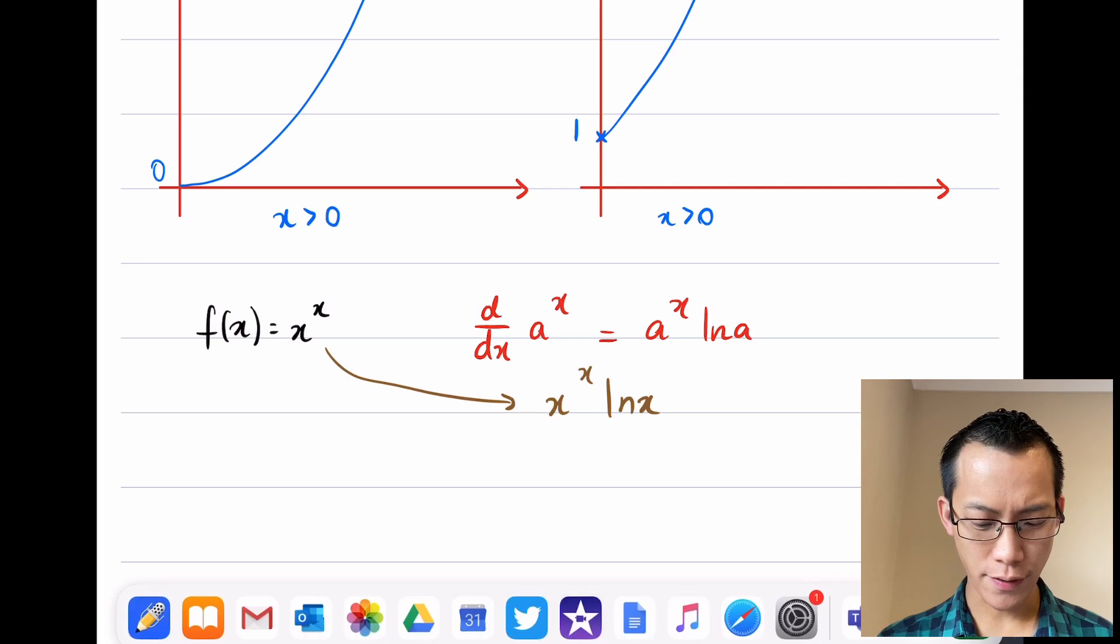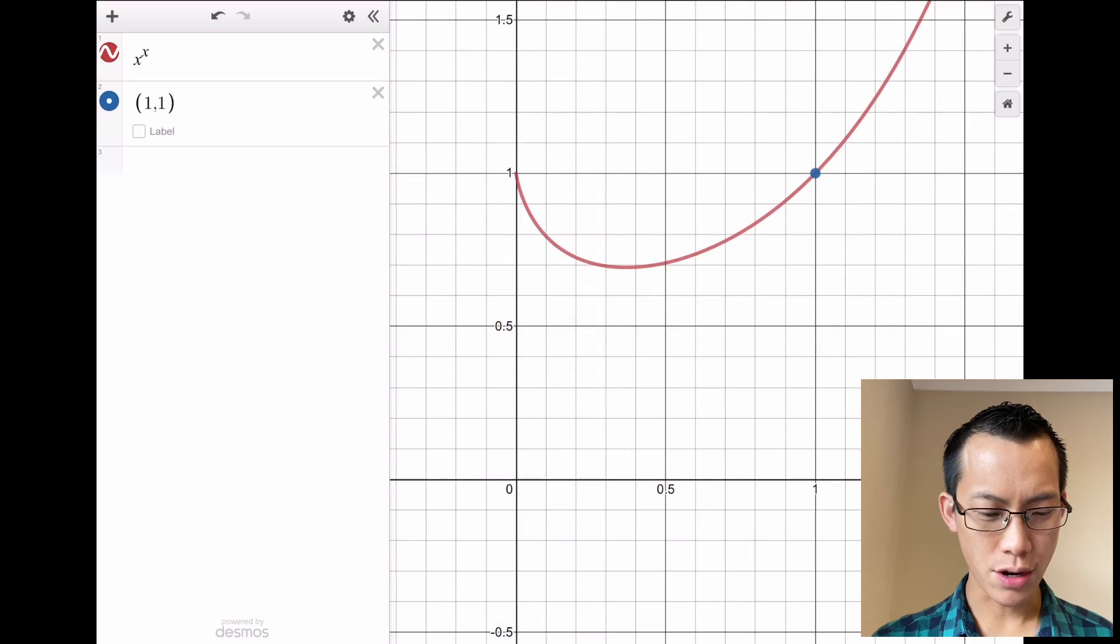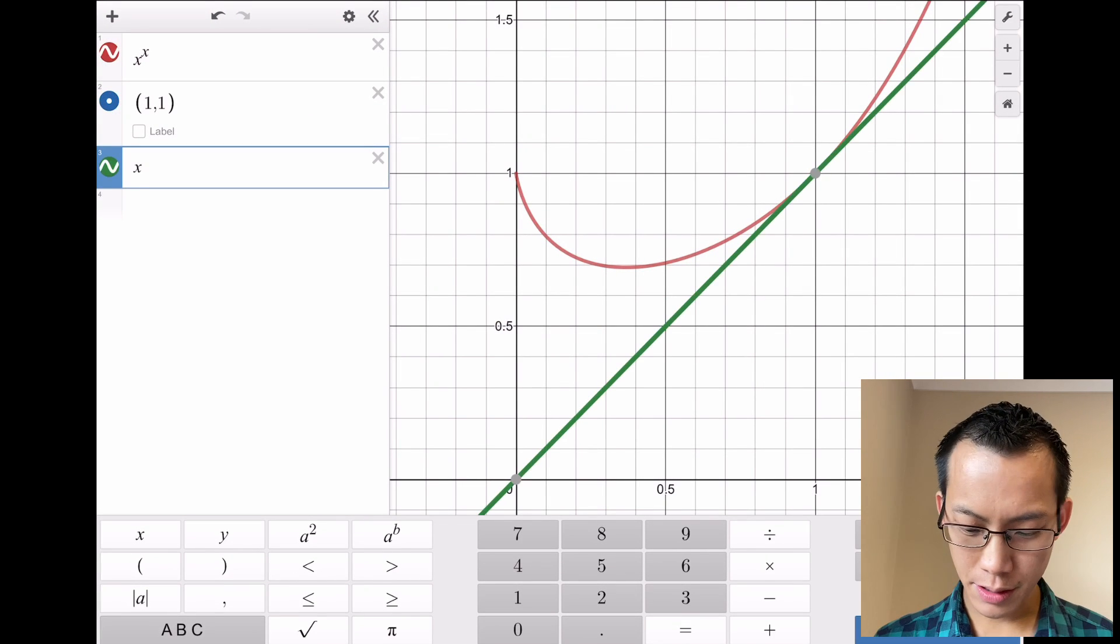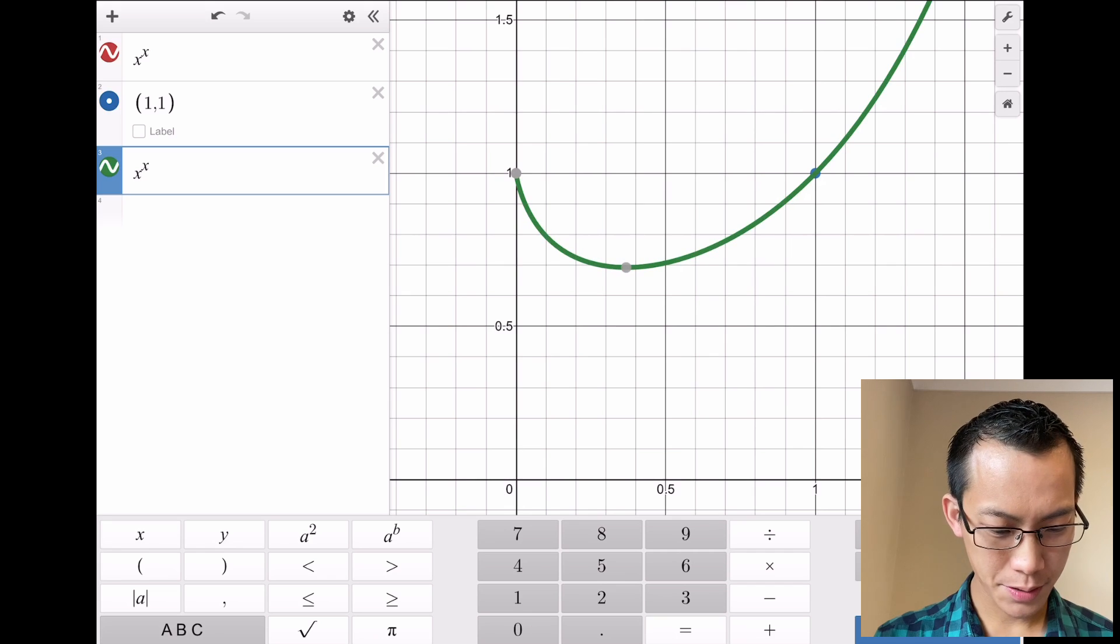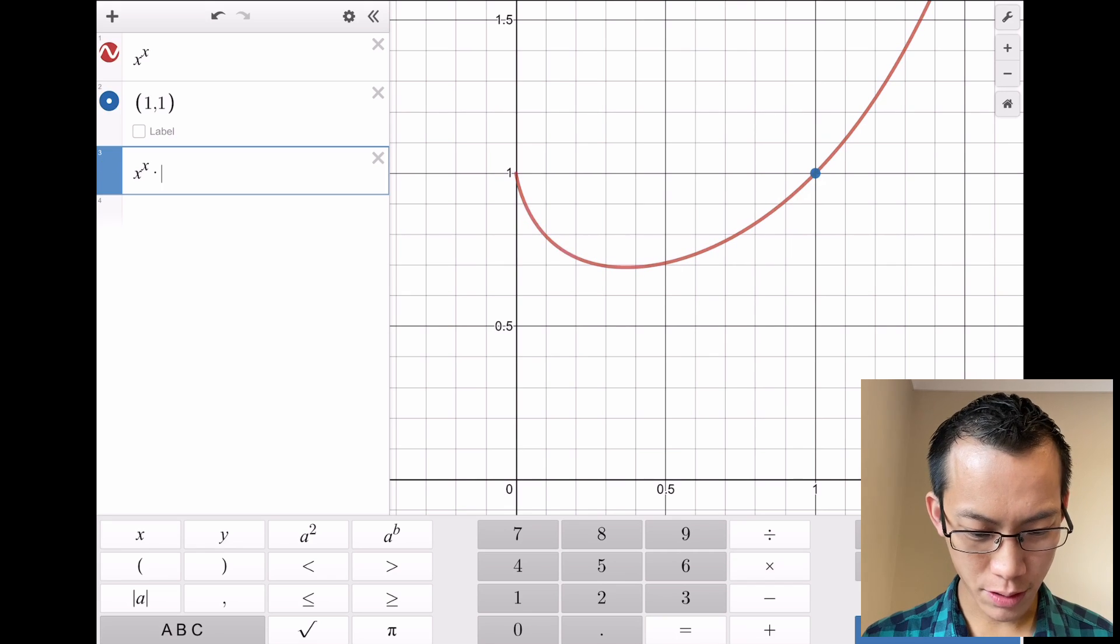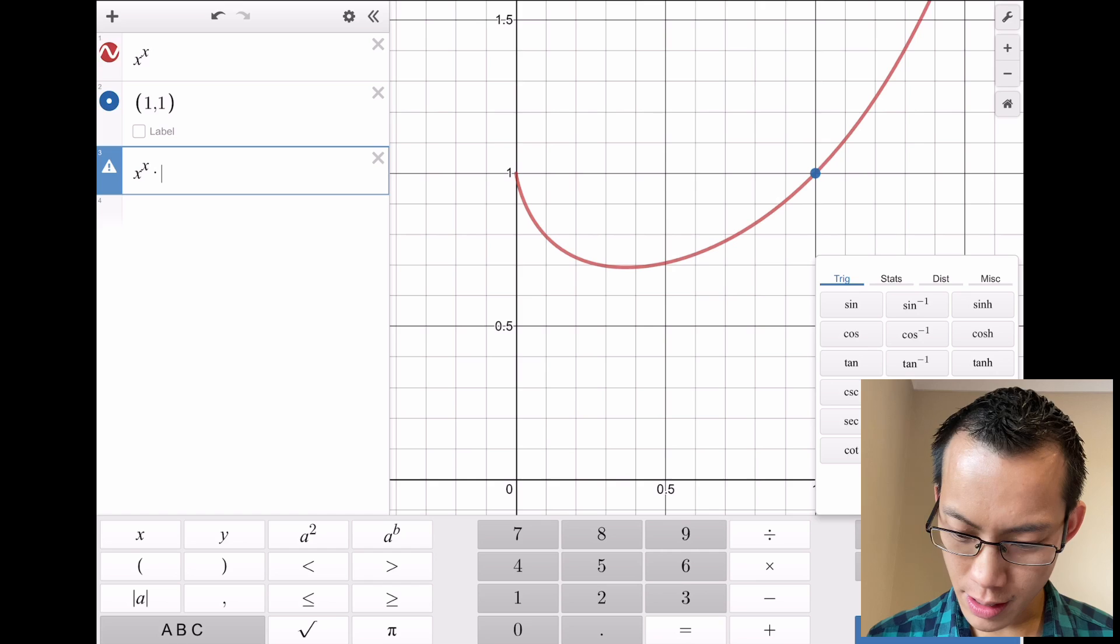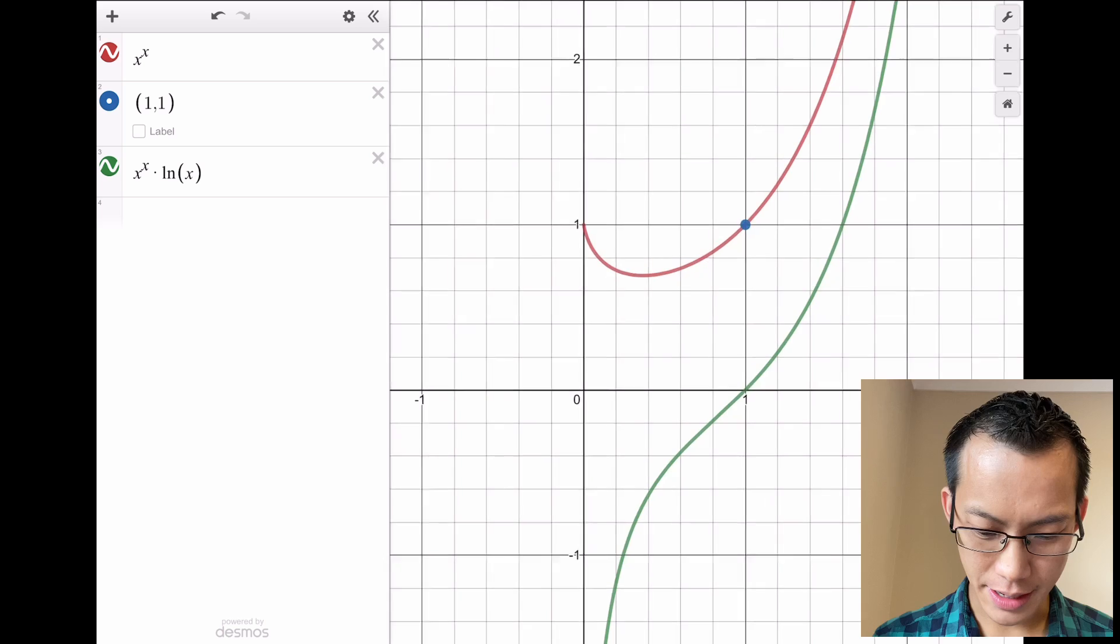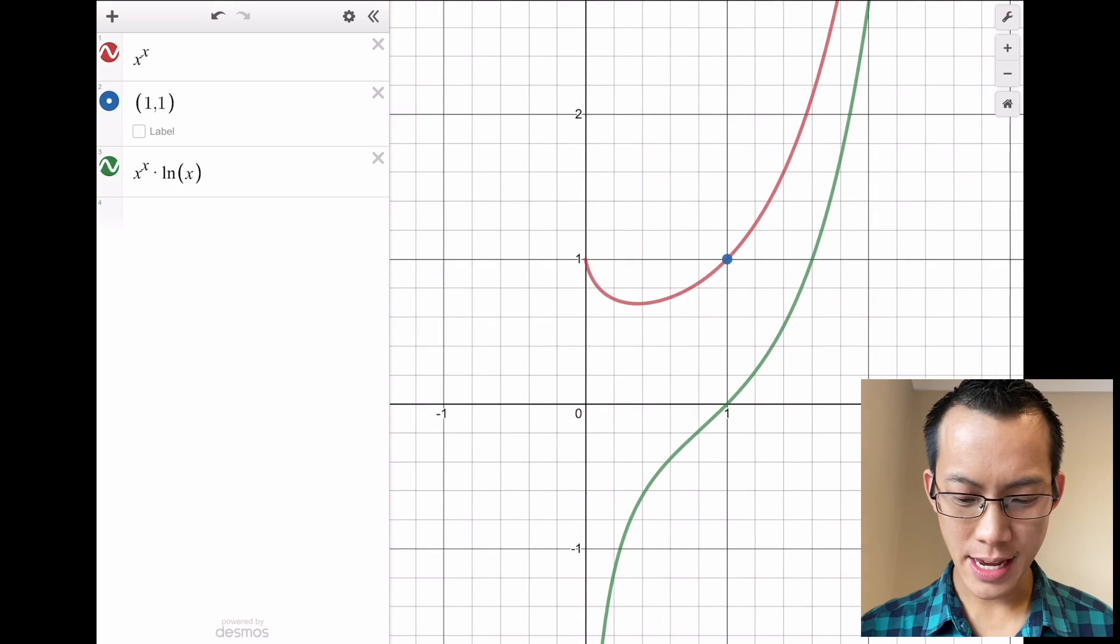If I treat this in the same way, then I'm going to get x^x log(x). Let's see what happens if I give this a go—this will be interesting. If I come back to our function over here, what does x^x log(x) look like? I'm going to multiply x^x by log(x).